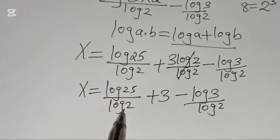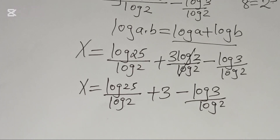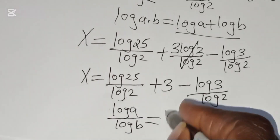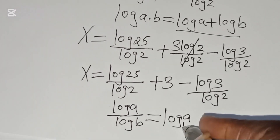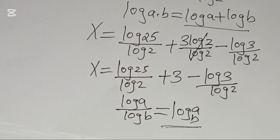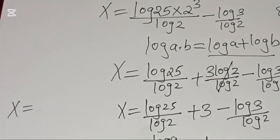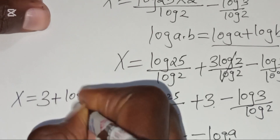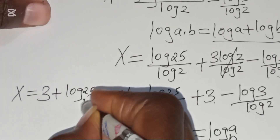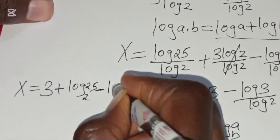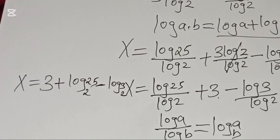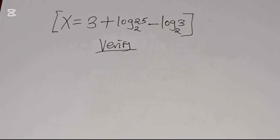Now, log(a)/log(b) is the change-of-base formula, equal to log base b of a. So x = 3 + log₂(25) − log₂(3). That is the value of x.